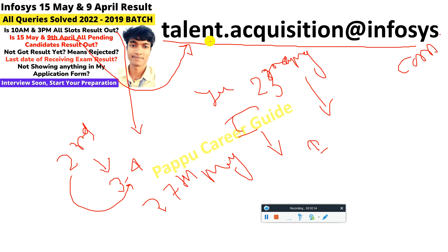If you have already received a rejection mail, do not try to mail the talent acquisition team. If you are waiting for your interview result — specifically 9th April candidates — write a mail to that email ID. If they are not responding within 10 to 15 days, then just try to move on.